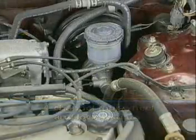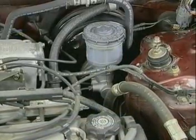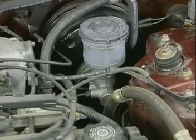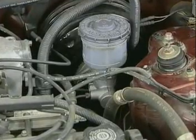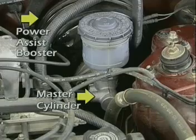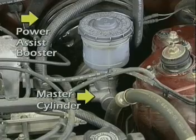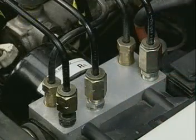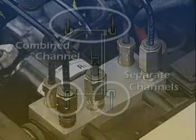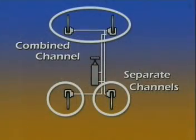Rear-wheel anti-lock systems are exclusively non-integral systems because the traditional master cylinder and power assist booster are required to operate the front brakes that are not part of the ABS system. Three-channel systems can be non-integral or integral. All three-channel systems combine the rear brakes on one channel and use separate channels for the two front wheels.